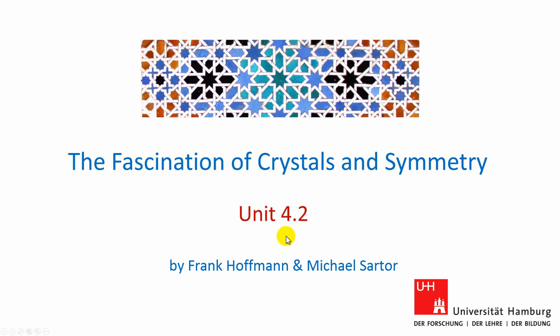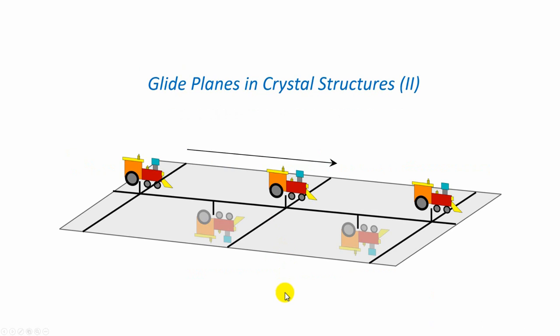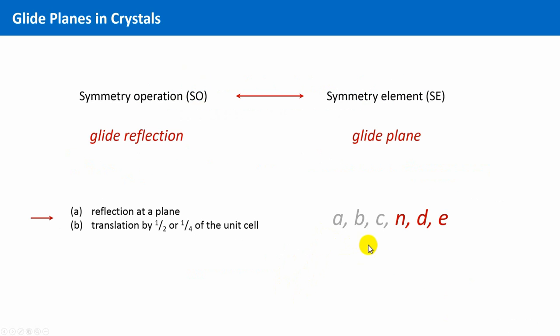Welcome to unit 4.2. In the last unit, we already discussed three of the six different glide planes that can occur in crystal structures. We will now proceed with the more special variants of glide planes, the glide planes N, D and E.